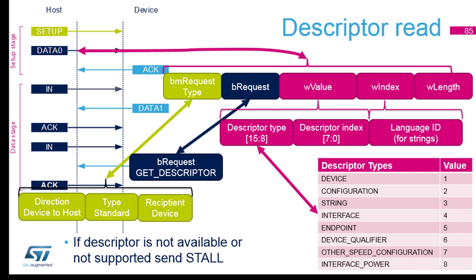Let's go into more detail. In the setup transaction, we have a setup stage and data stage. The setup stage says: I will request direction device-to-host, standard device — there is a get descriptors. Then we say what kind of descriptor we want. First we request the device descriptor, then we request all the others: the strings associated with this device, the configuration, the interface, and the endpoint. Now you better understand this setup transaction: you get the descriptor of the device, then the different elements of the structures, and at the end the host has all the information about the device configuration.